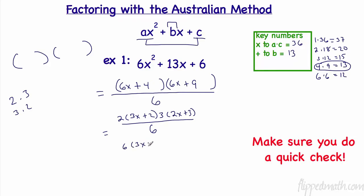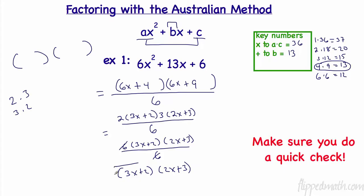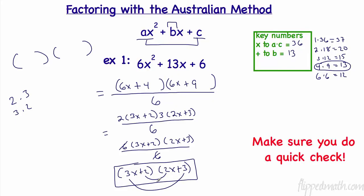Here's why I love the Australian method — my extra factors were 2 and 3, and 2 times 3 equals 6, which cancels. So we're left with (3x + 2)(2x + 3). Quick check: first times first, 3x times 2x is 6x squared; last times last, 2 times 3 is 6. For the middle: 2 times 2x is 4x, and 3 times 3x is 9x, giving 13x. Everything checks out.